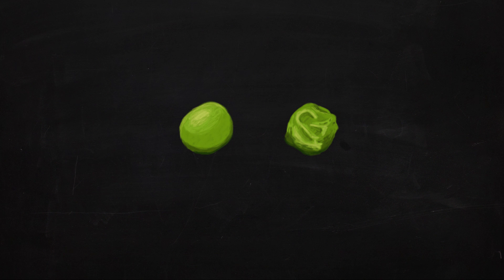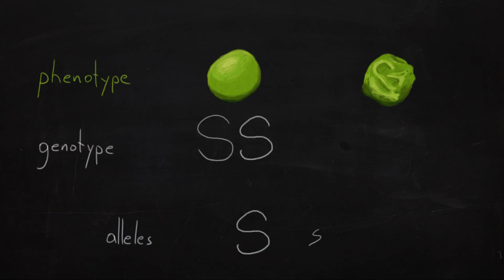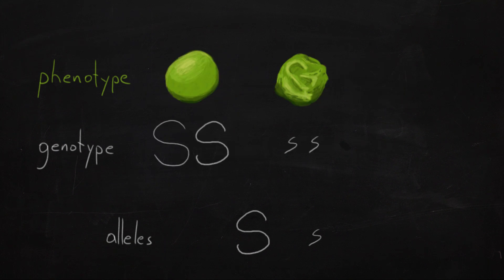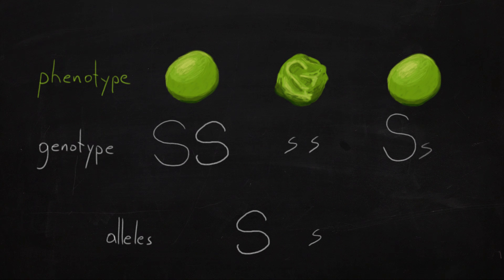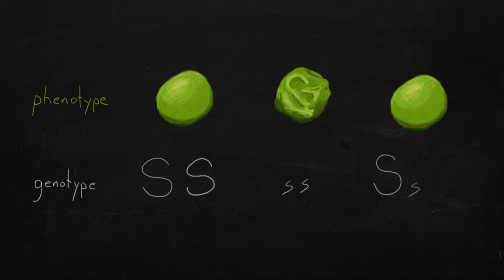For example, whether a pea seed is wrinkled or smooth is controlled by one gene with two different alleles. We'll call these alleles big S and little s. When you have two big S alleles you get smooth peas and when you get two little s alleles you get wrinkled peas. But when you get a big S and a little s together you get smooth peas. So it seems that the big S allele is dominant and the little s allele is recessive. Because the phenotype of big S big S and big S little s is different from the little s little s.